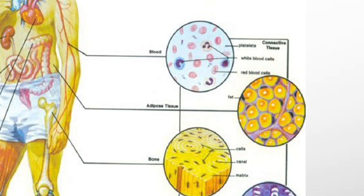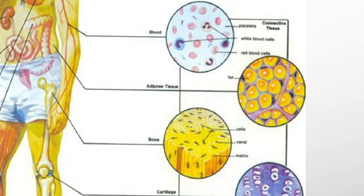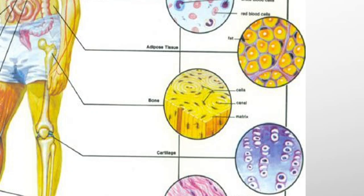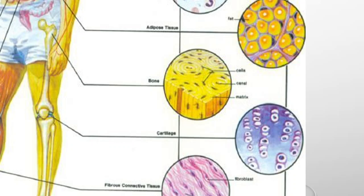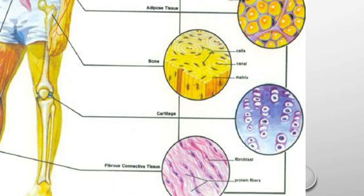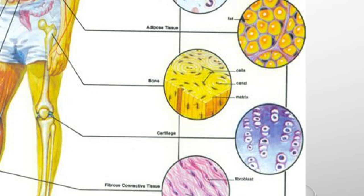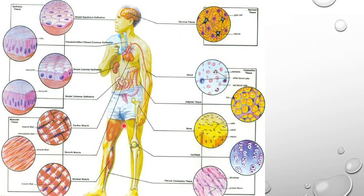Blood is the main circulatory fluid of the body — it helps in transport of nutrients and transport of gases such as oxygen and carbon dioxide. Bone is the supporting framework of the body, cartilage also helps in supporting bones, and fibrous connective tissue — that is ligaments and tendons — complete the different types of animal tissues: epithelial, connective, muscle, and neural tissue.